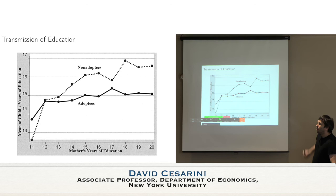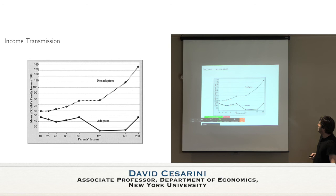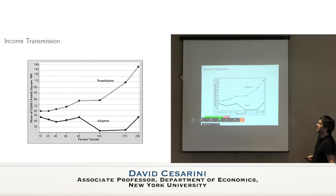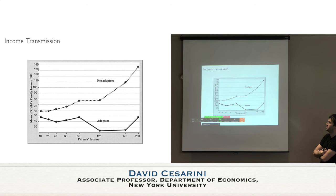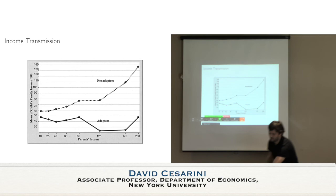What's the theory for why genetic components transmit income but not education? There isn't really a theory — it's just an observation at this point. There's some sort of confounding going on with that relationship, and at minimum we should be cautious of giving it a causal interpretation. We'll reconvene in half an hour for the next lecture.